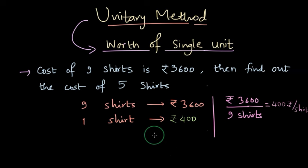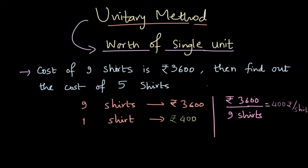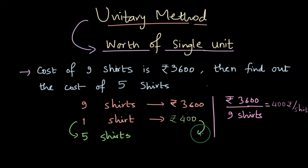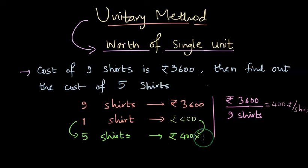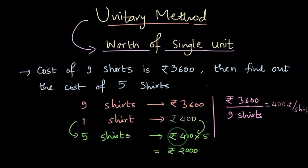Now that we have found the cost of one unit — one shirt — we can find the cost of 5 shirts. Since we are multiplying 1 by 5, we multiply 400 by 5 as well. The cost of 5 shirts is 400 times 5, which is 2000 rupees. Let us solve one more problem.